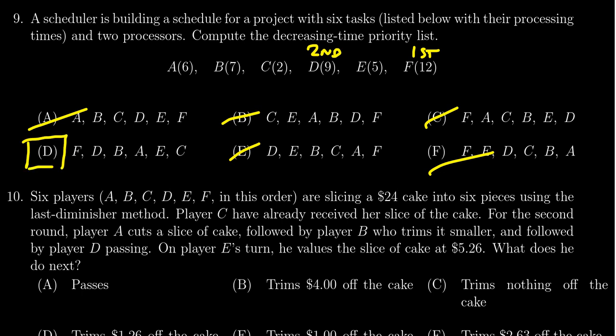But let's just finish it out here. After D would come B, because that's the next highest processing time. Then would come A. And then would come E. So that's the fifth one. And then the last would be C.